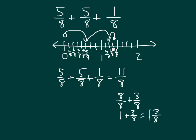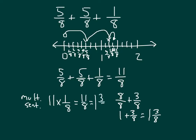Looking at a multiplication sentence: how many eighths are we looking at? We have 5, then 5 more which is 10, and 1 more which is 11. So our multiplication sentence is 11 times 1 eighth, which equals 11 eighths, which does equal 1 and 3 eighths.